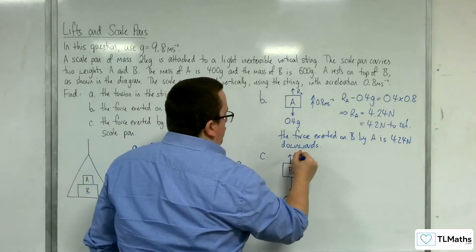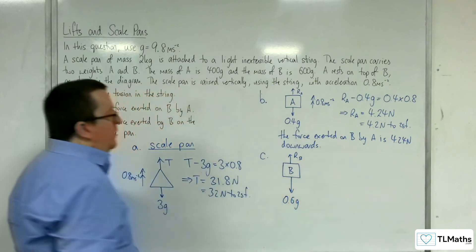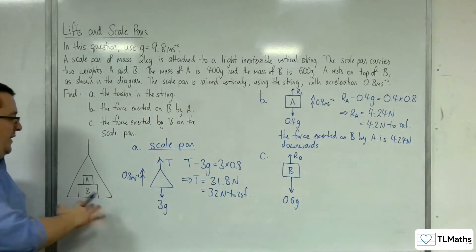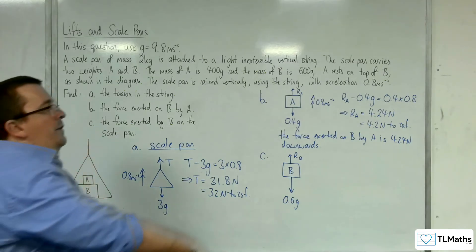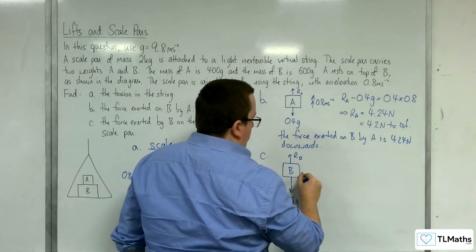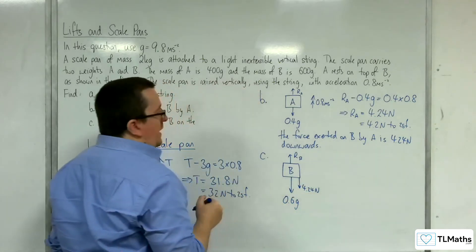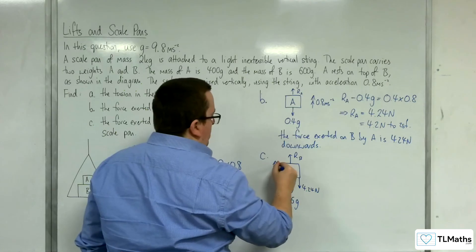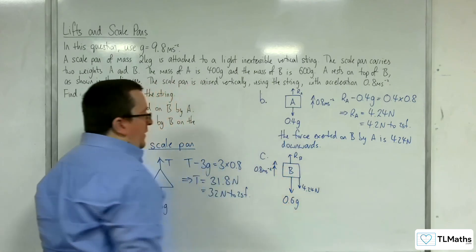And we're going to have its normal reaction, so R_B, working vertically upwards, because it's in contact with the base of the scale pan. Now we've also got A above it, pushing down, at 4.24 newtons. So we've got to include that. And it's accelerating upwards at 0.8 metres per second per second.